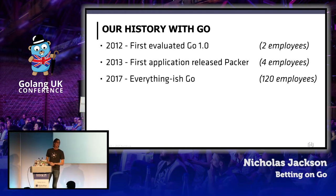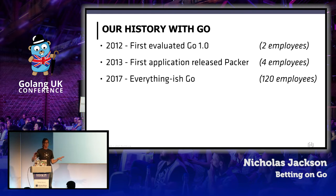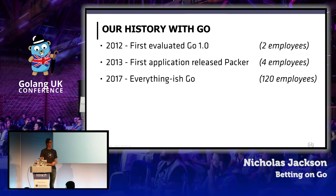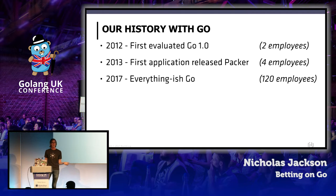So 2012 — this is when we first started to look at Go, around Go 1.0, with two employees at HashiCorp: Mitchell and Armand. Then in 2013 we released Packer, which was our first Go application. At the time there were four employees.